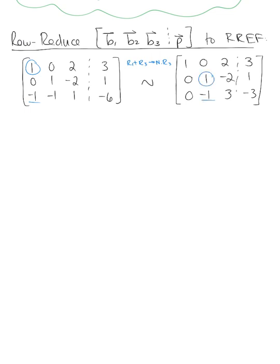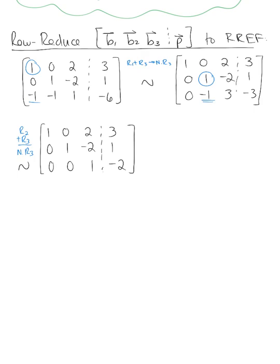Moving to the second pivot position, we add row 2 to row 3 to eliminate the entry below it. This gives the augmented matrix: [1, 0, -1 | 3; 0, 1, -1 | 1; 0, 0, 1 | -2]. The second column is now set, and we have our third pivot.